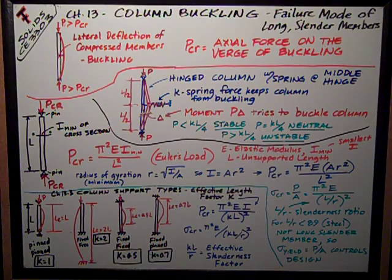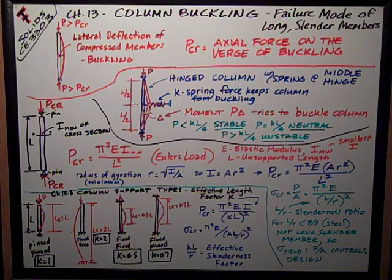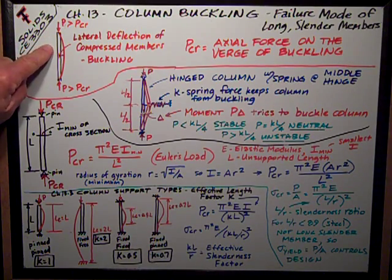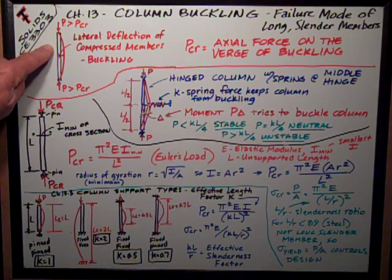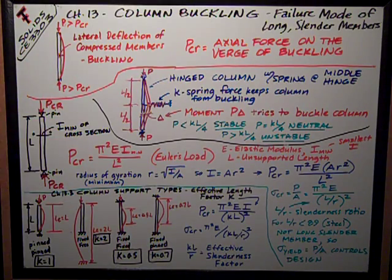Column buckling is the failure mode of long slender members. A column has to be really short and compact to fail under yield stress — to fail due to crushing or something like that. The way a column fails is you put a load on it, and at some point you exceed the critical load and lateral deflection occurs. That lateral deflection in a compressed member is called buckling.